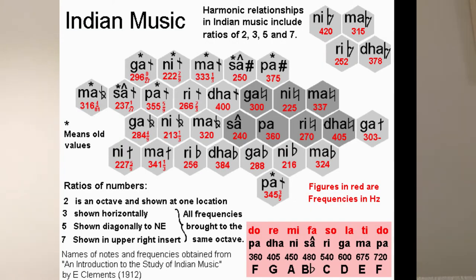I found the book An Introduction to the Study of Indian Music, written by an Englishman named E. Clements in 1912. He studied how the Indians played music and how they moved around different modulations, and worked out the whole arrangement of relationships of different notes and their frequencies.